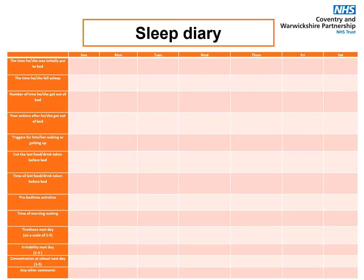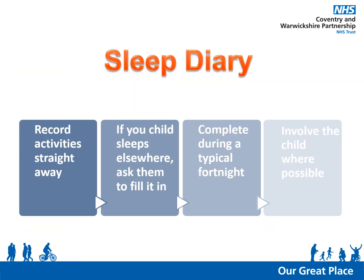If you are worried about your child's sleep, keeping a sleep diary will help you get an accurate picture of their sleep patterns and identify reasons why they may not be sleeping. Tips for keeping a sleep diary include: record activity straight away as you may forget timings by morning; if your child sleeps elsewhere, ask them to complete the diary too; fill it in honestly and record every waking period; keep the diary during a typical fortnight, as routines are naturally impacted by events like Christmas or holidays; and if your child is able, involve them in the process.